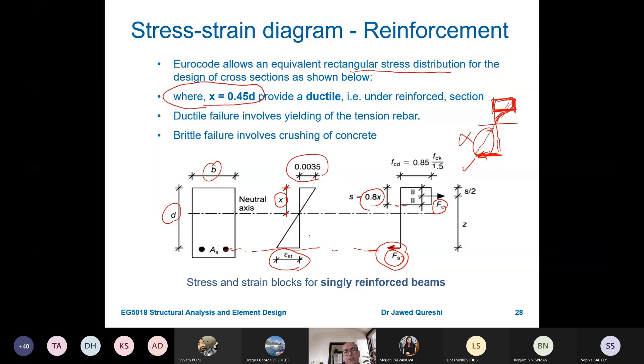Normally we take x as 0.45d for a ductile failure. It means that the section is under reinforced. This is very important. There are three types: under reinforced section, balanced section, and over reinforced section. If value of this x is equal to 0.45d then it's going to be balanced. If it is more than 0.45d then it's going to be over reinforced.